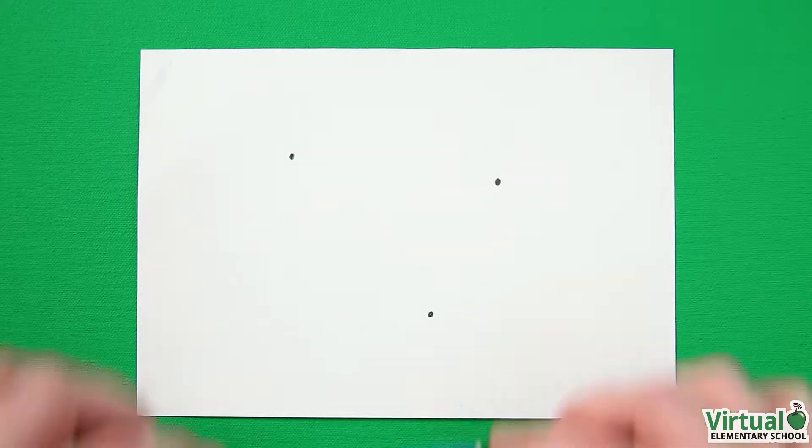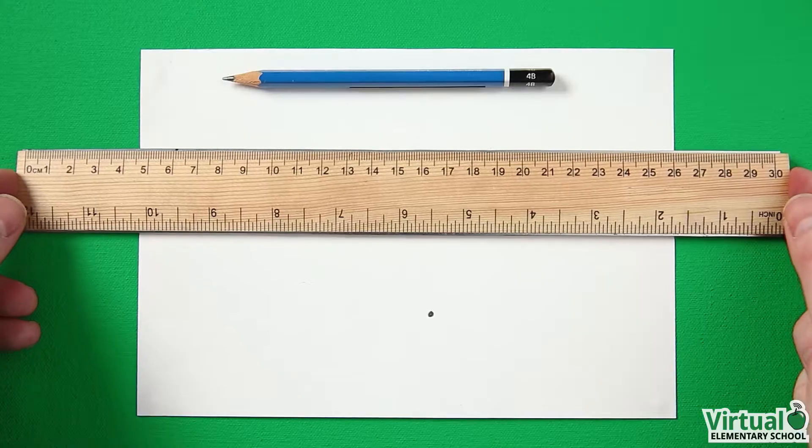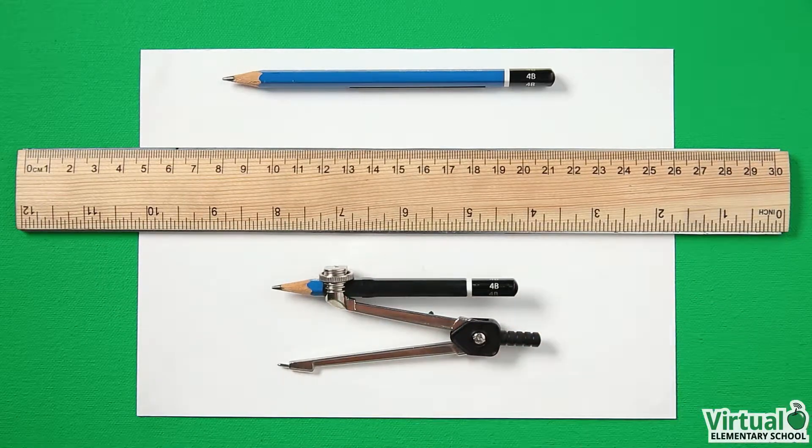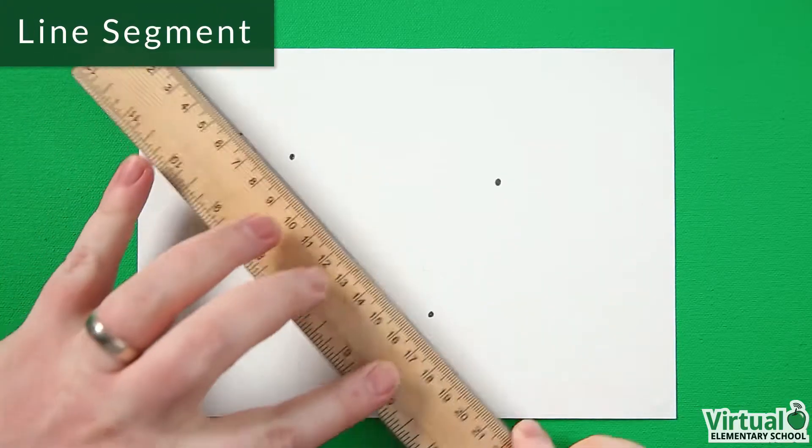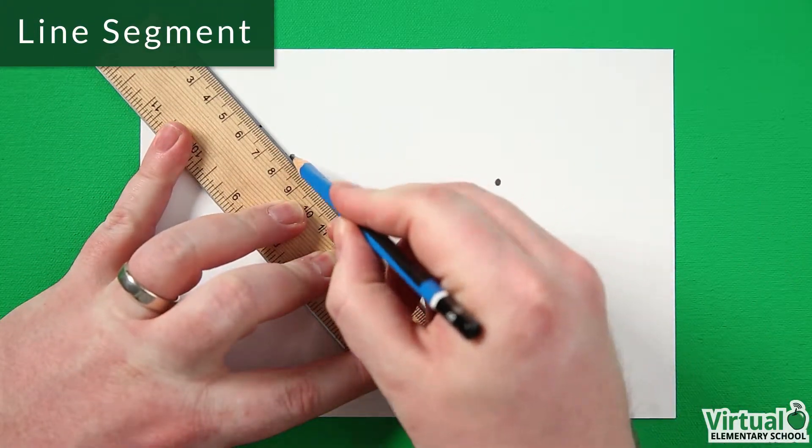To do this, we will need a pencil, a ruler, and a compass. We can join any two points with a line segment using the pencil and ruler.